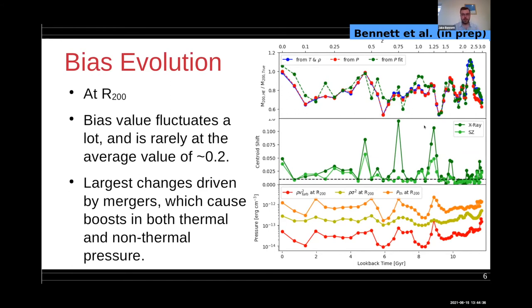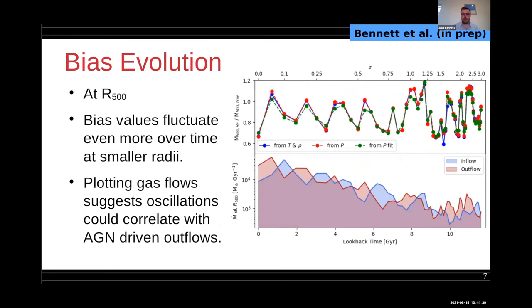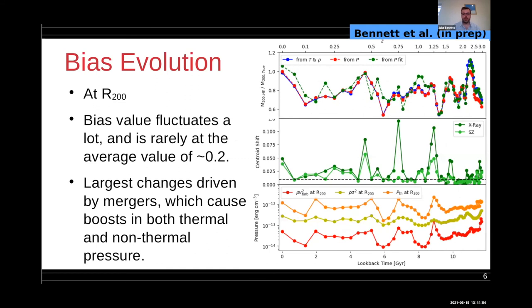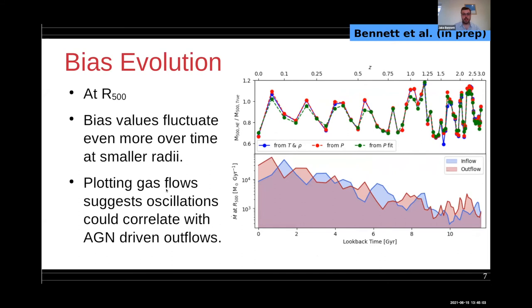This is at r200. If we go further into the halo at r500, we find a more extreme example that the bias is jumping about all over the place. Again when this major merger occurs you find this drop followed by a jump up. Where before there wasn't as much structure at r500, the bias is jumping up and down throughout this time. Interestingly, if you plot the gas flows on this bottom panel, which is mass flux in and out in blue and red respectively, we find that the time scale of these bias jumps corresponds to roughly where outflows dominate over inflows.